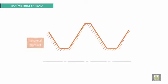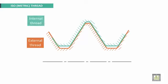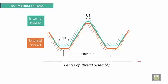For isometric threads, this is the external thread and this is the internal thread. This is the center line of the thread assembly. The dimensions shown are P/8 pitch, P/4 pitch, and the total pitch P. The angle for the isometric thread is 60 degrees.